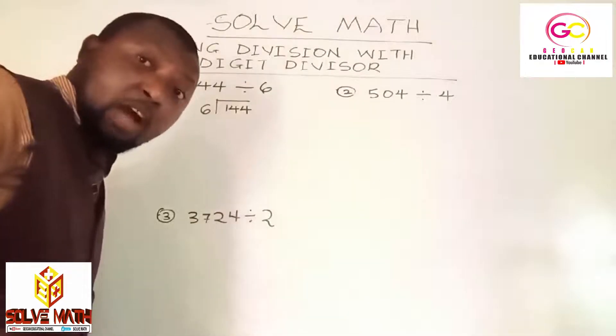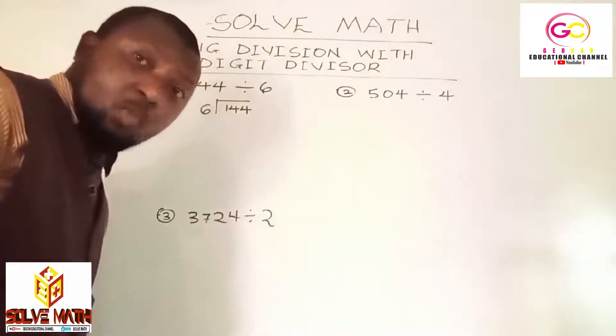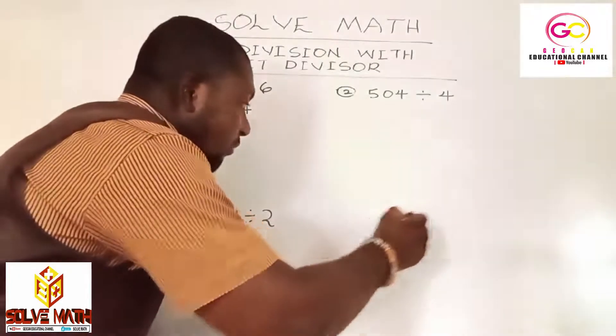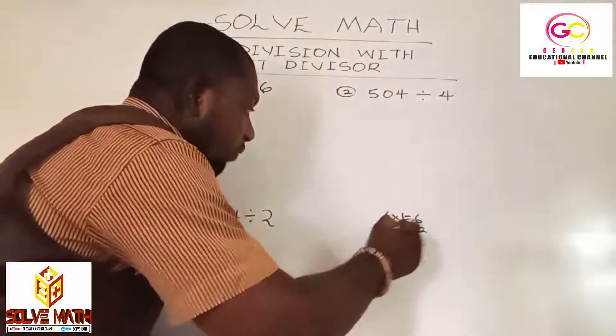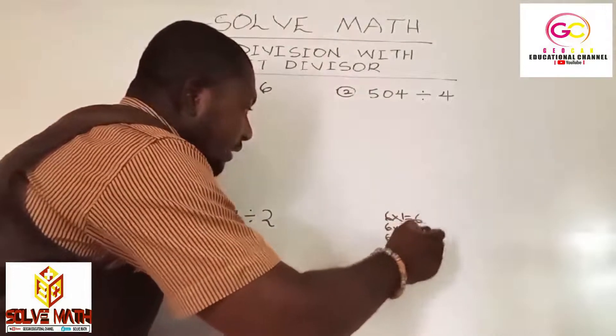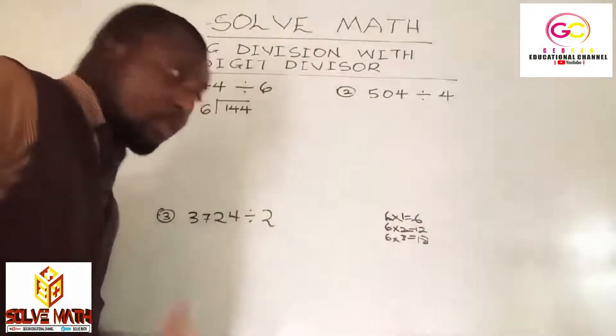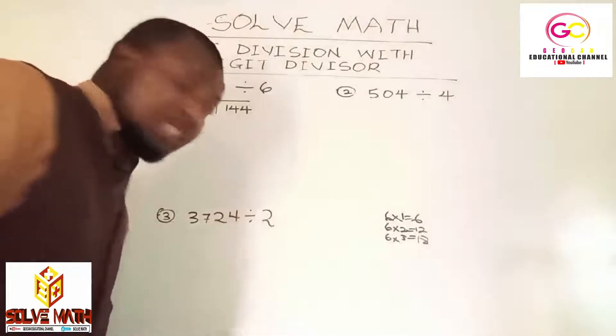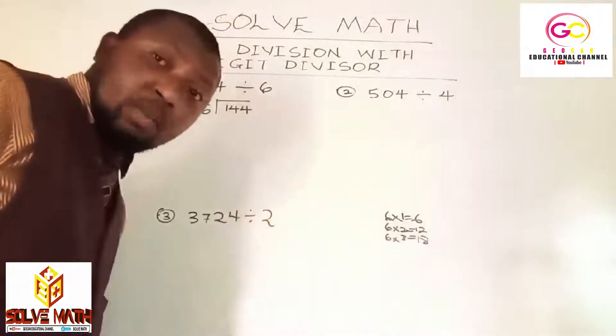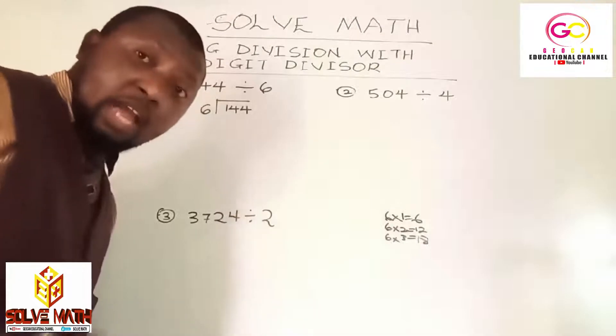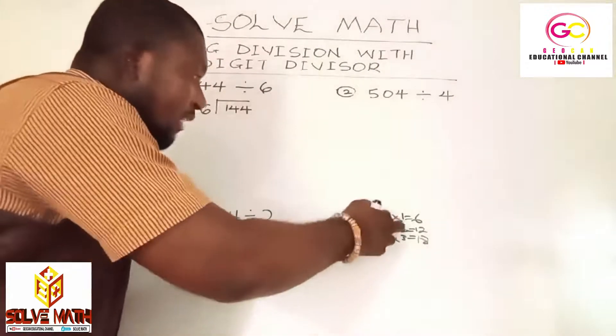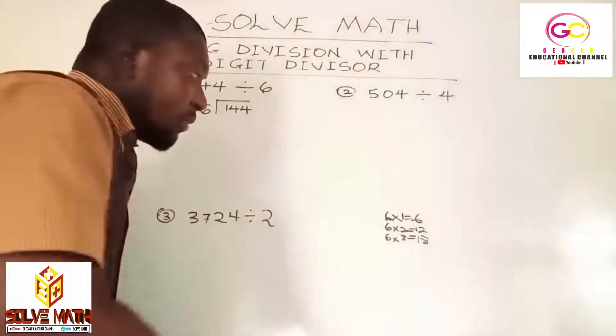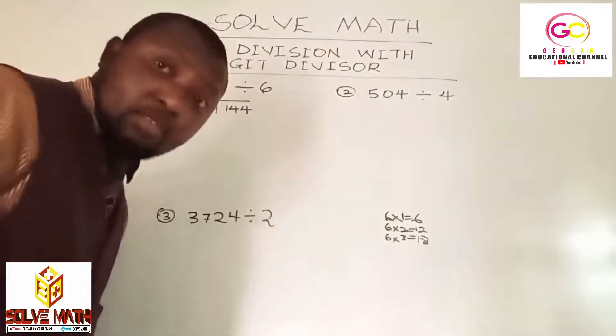6 will go into 14 how many times? 6 times 1 is 6, 6 times 2 is 12, 6 times 3 is 18. If we choose 6 times 3, it will be 18, which will be more than the 14, so our subtraction will be difficult. 6 times 2 will be 12. What it means is that 6 will go into 14 two times.